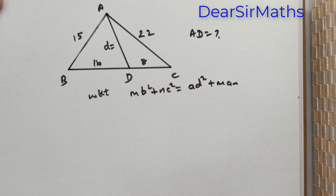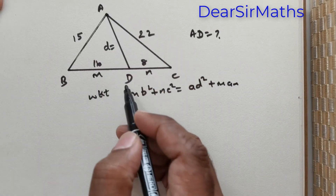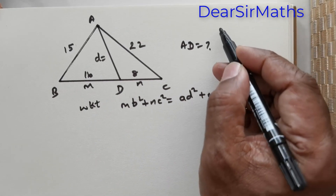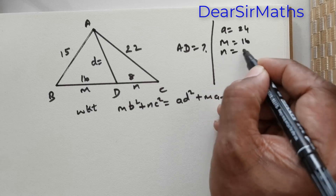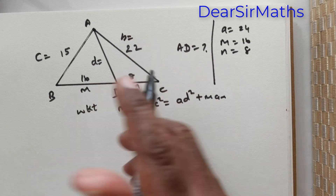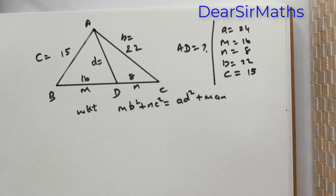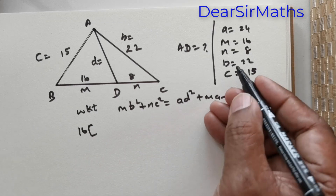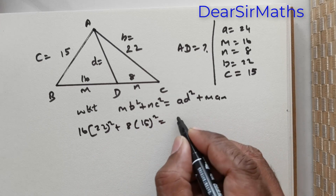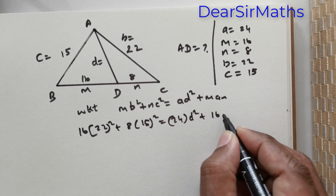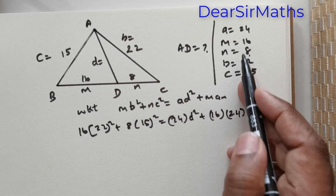Applying the formula: the entire side A is 24, M is 16, N is 8, B is 22, and C is 15. Substituting: M times B squared is 16 times 22 squared, N times C squared is 8 times 15 squared, A is 24, D squared is unknown, M is 16, A is 24, N is 8.